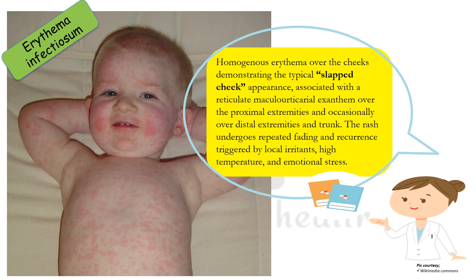Erythema infectiosum has homogenous erythema over the cheeks, demonstrating the typical slapped cheek appearance, which is often asked in exams. It is associated with a reticulate maculourticarial exanthem over the proximal extremities and occasionally over the distal extremities and trunk. The rash undergoes repeated fading and recurrence triggered by local irritants, high temperature, and emotional stress.